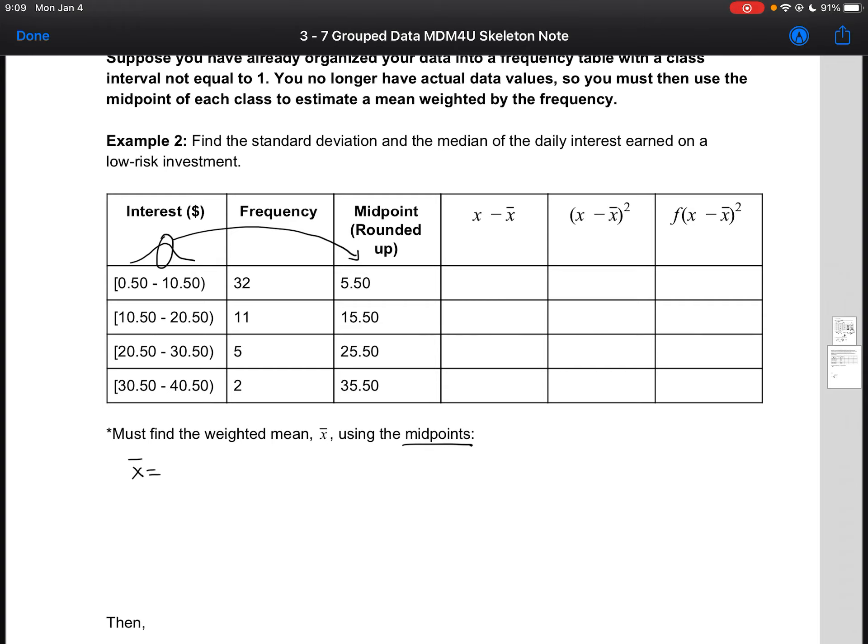We are going to multiply our weights, which is our frequency column here, by the midpoint for each of the intervals. So for our first one, we've got 32 times 5.50 plus 11 times 15.50 plus 5 times 25.50 plus 2 times 35.50. And then we're going to divide by the sum of our frequencies, which is really our total number of data points.